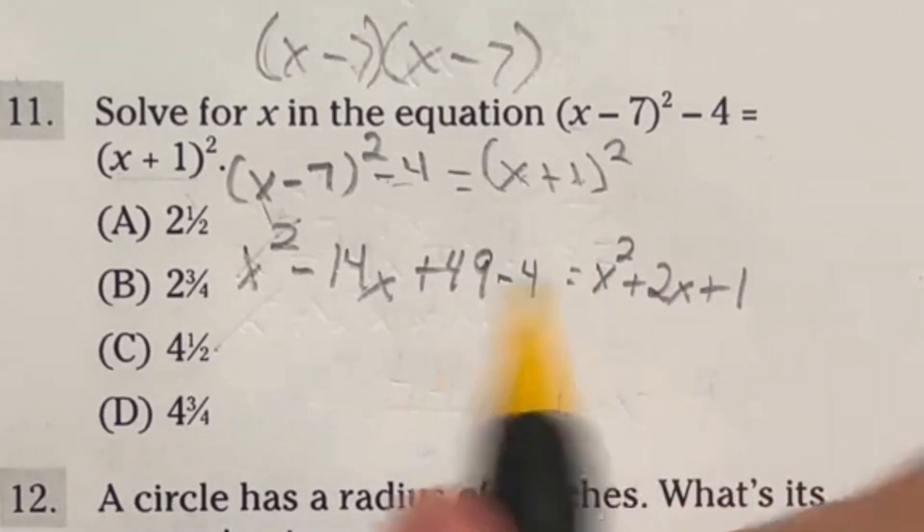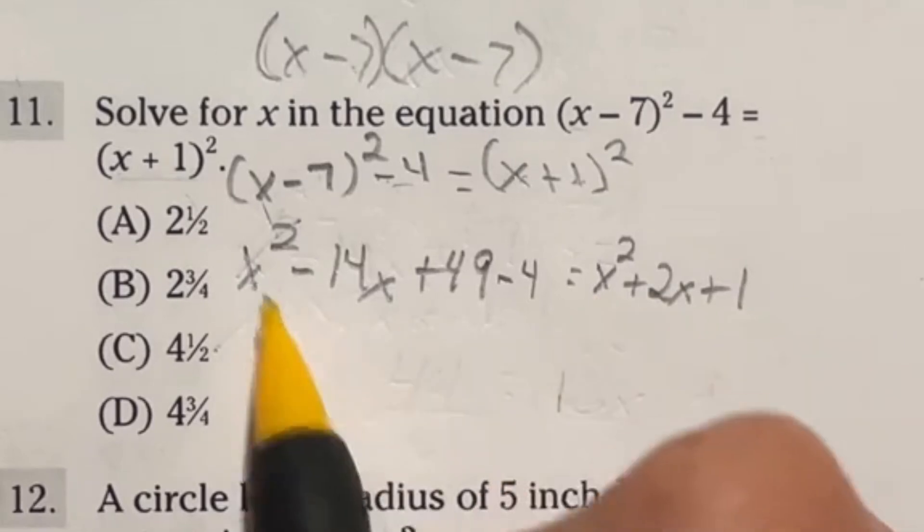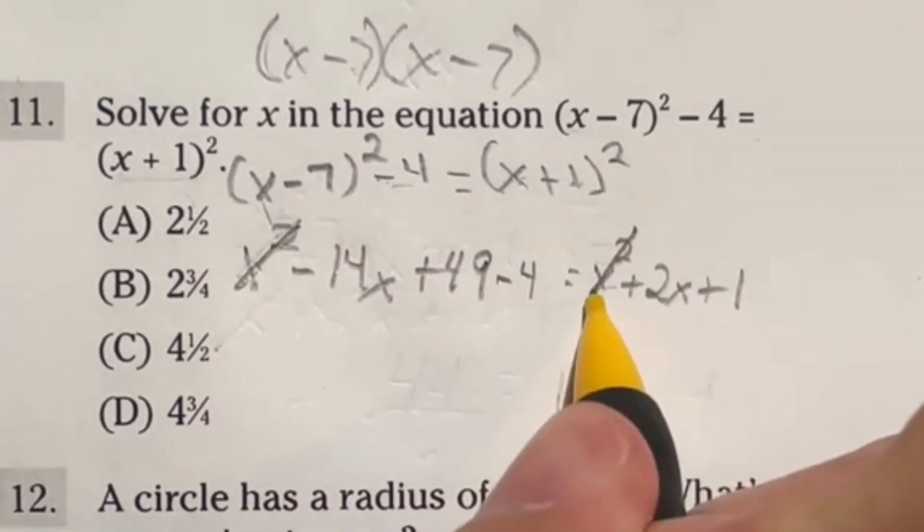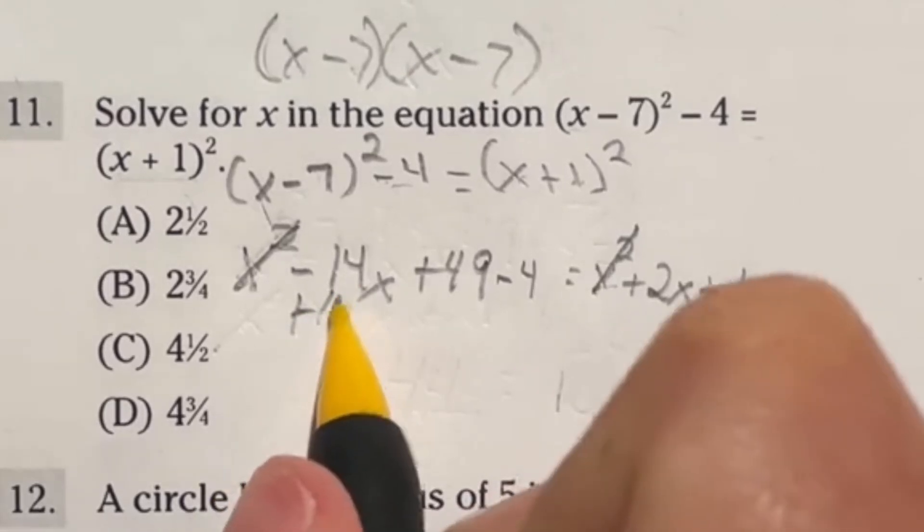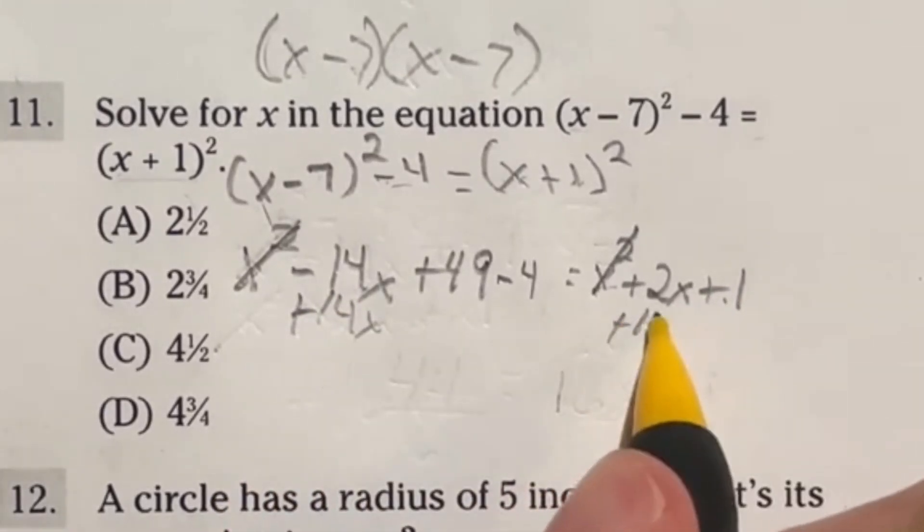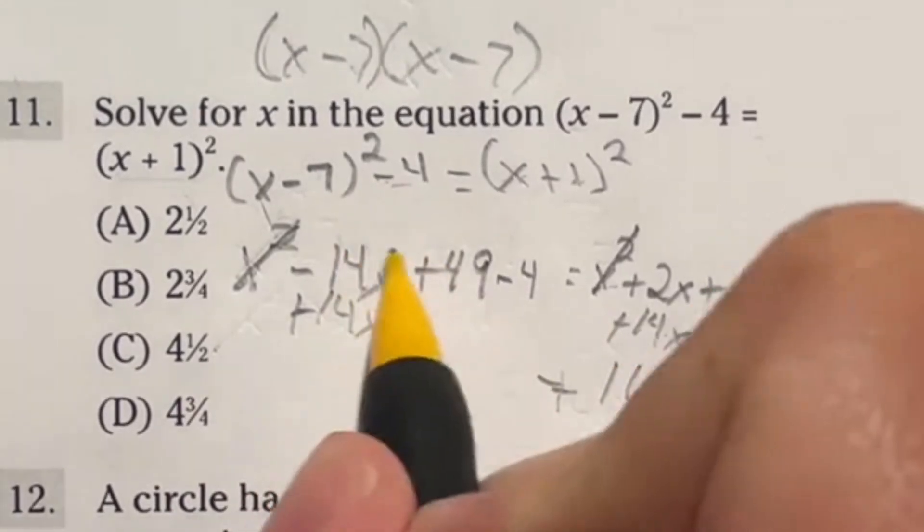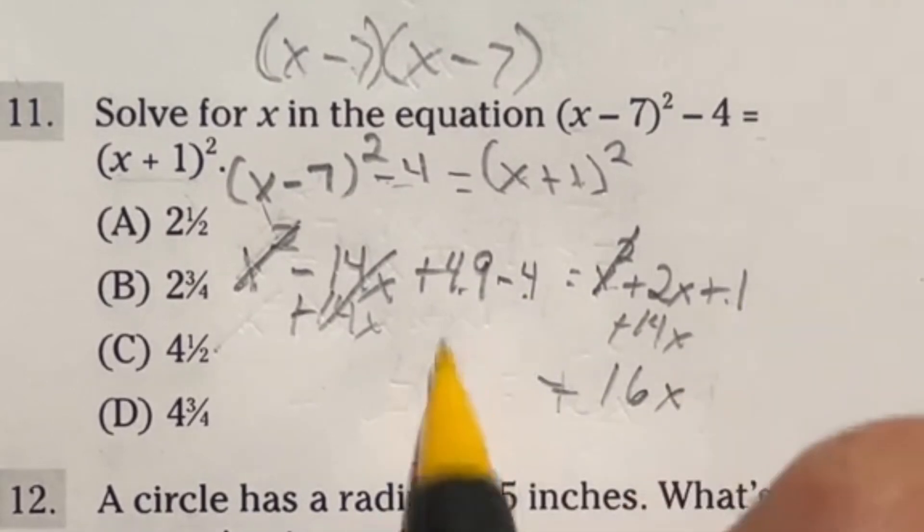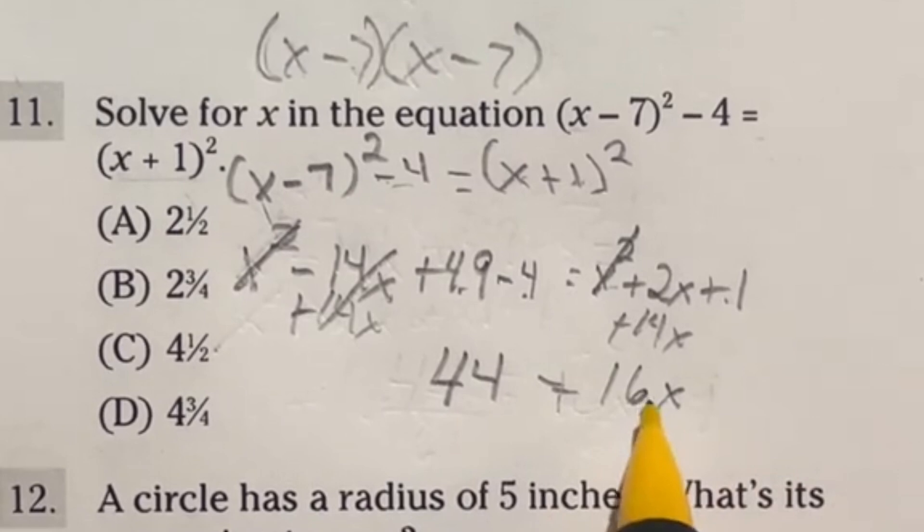Now our goal is to get all of these so we just have an x by itself. Something that's nice here is when we subtract this to the other side, it's going to be x squared minus x squared, which means those are just going to cancel out. I'm going to get all my x's over here, so I'm going to add 14x to both sides. That's going to end up giving me a total of 16x over here. They cancel over here. 49 minus 4 is going to give me 45, but then minus this one when I move it to the other side is actually going to give me 44.